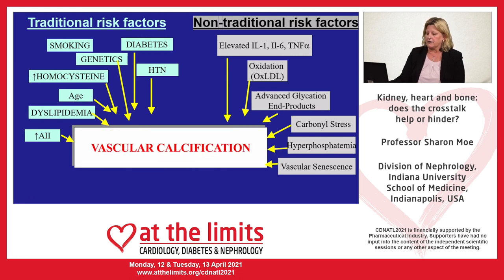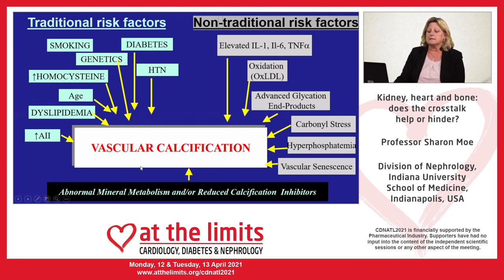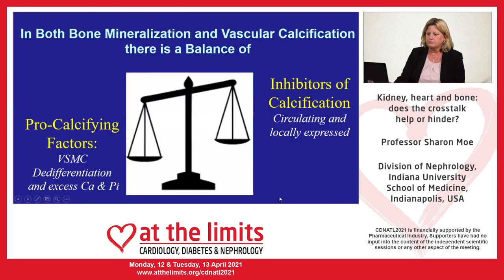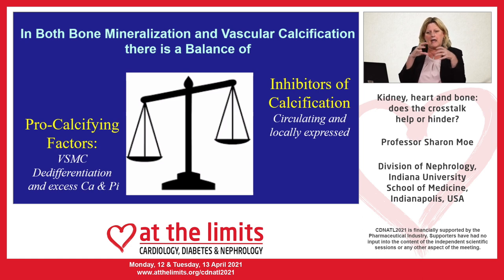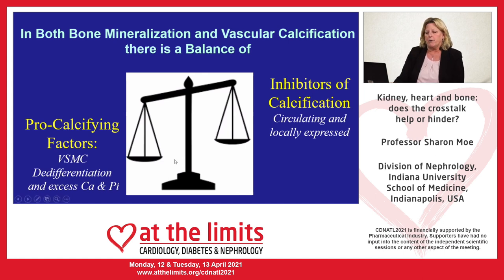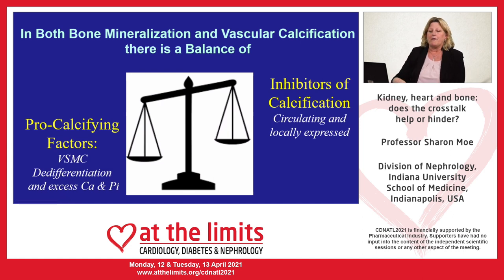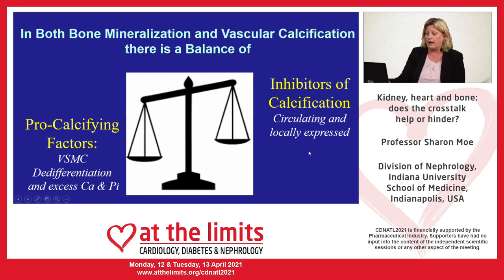The result is vascular calcification. But a third step has to happen first: either an abnormal mineral metabolism and/or reduced calcification inhibitors. When calcium and phosphorus are put together, they start to form a mineral deposit. The more calcium and phosphorus added, the more these grow — this is purely physicochemical and does not need anything else except pH changes. We would all be calcified if we didn't have inhibitors located in various body parts. The pro-calcifying factors are de-differentiation and excess calcium and phosphorus; inhibitors of calcification are both circulating and locally expressed.